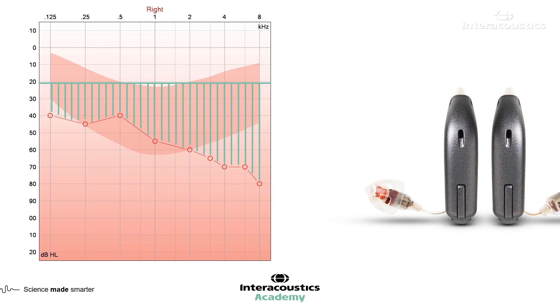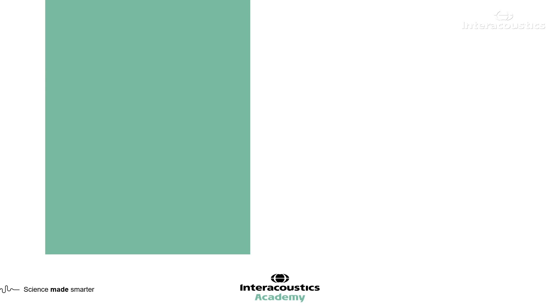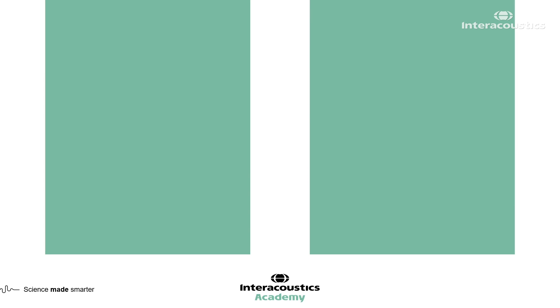But how do we know if we've actually done this? How do we know if we've achieved this with our hearing aid programming? We've got two options: there's validation — or evaluation, as some people might call it — and there's verification.